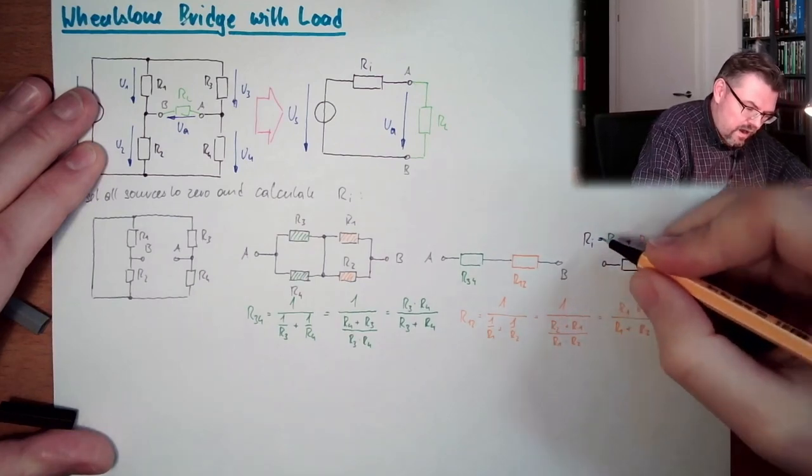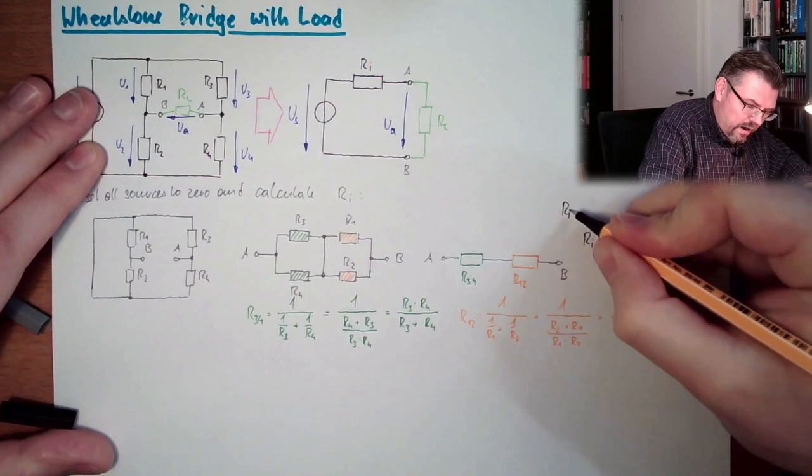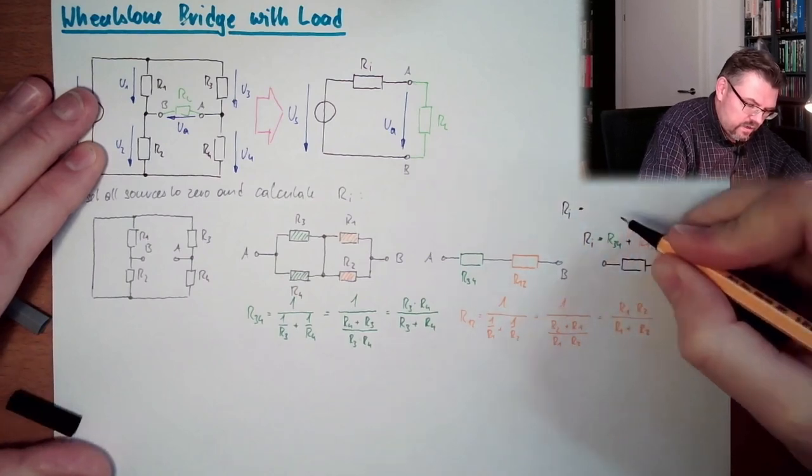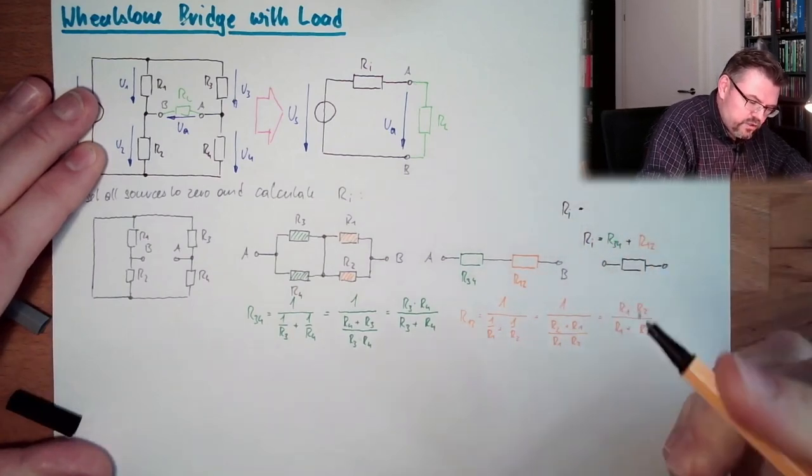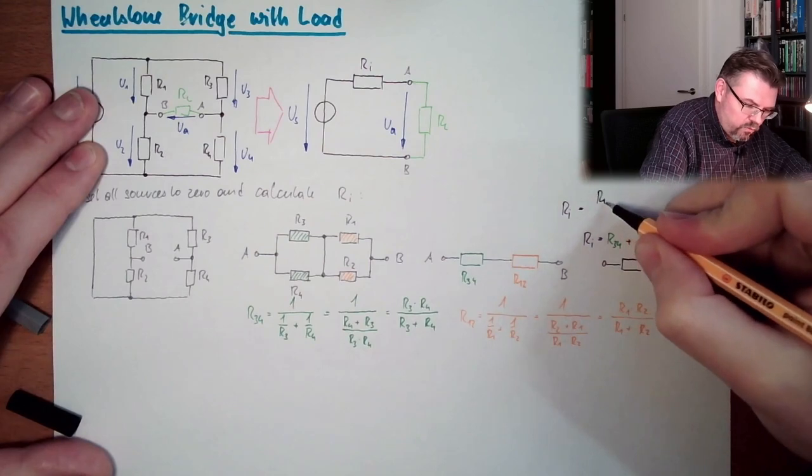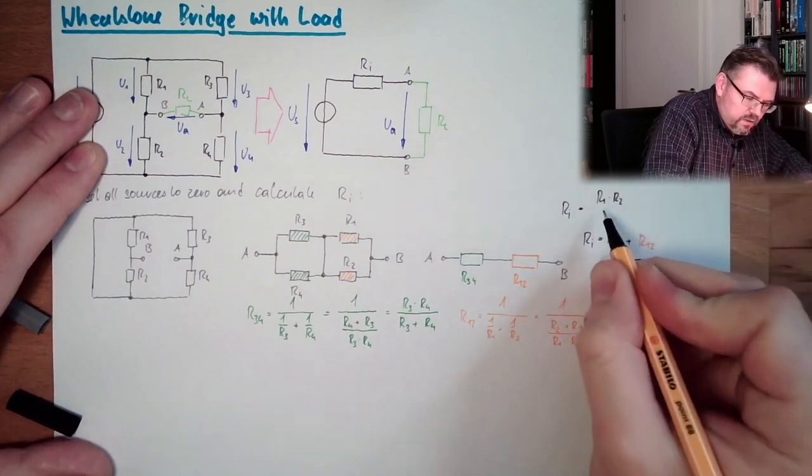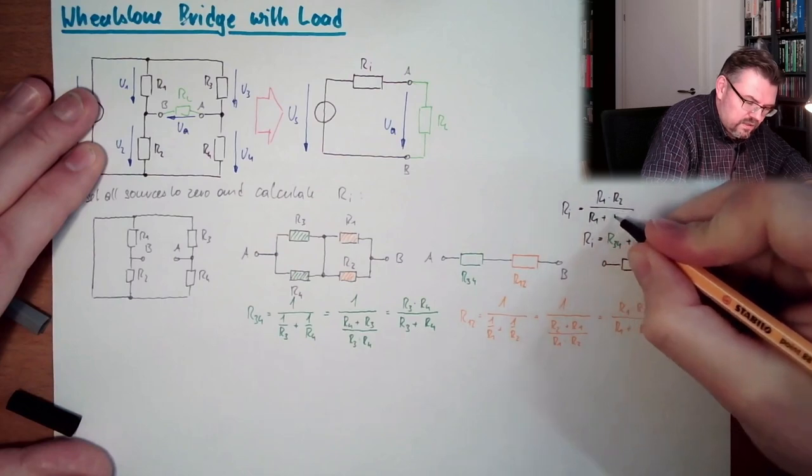So Ri equals, and now I simply switch the order: R1 multiplied by R2 divided by R1 plus R2.